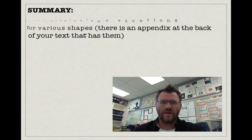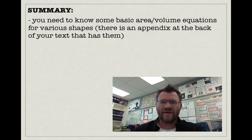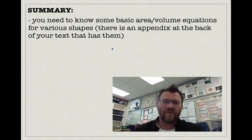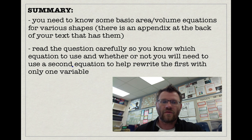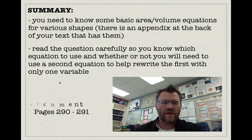In summary, you need to know some basic area and volume equations for various shapes — there's an appendix at the back of your text that has them. Read the question carefully so you know which equation to use and whether you need a second equation to rewrite the first with only one variable. Then use implicit differentiation. Your assignment is on pages 290 to 291.